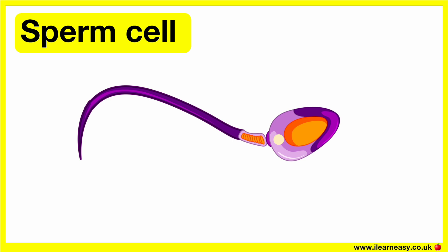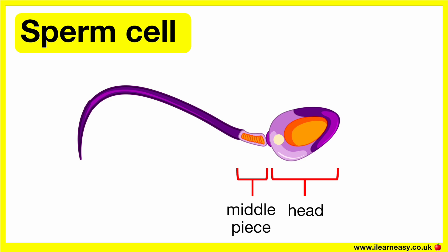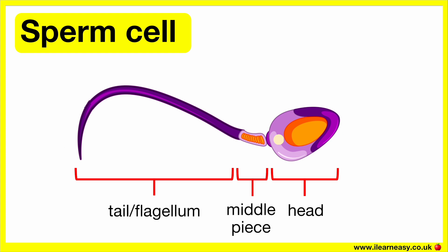The sperm cell is well adapted to its function and can be split into three parts: the head, the middle piece, and the tail or flagellum. The sperm cell also has other parts which aid its function. Part of the tip of the head, known as the acrosome, releases enzymes which digest the egg membrane.